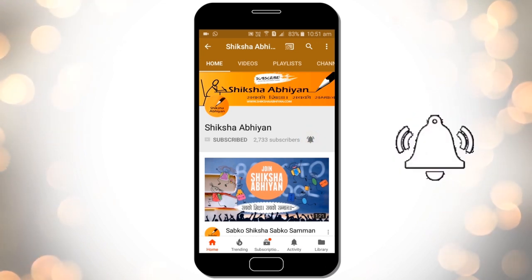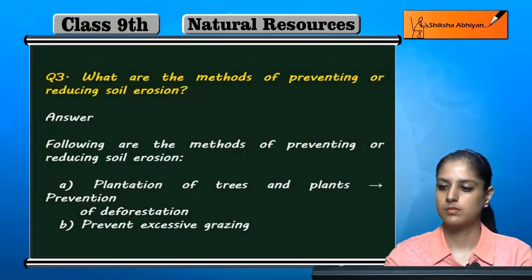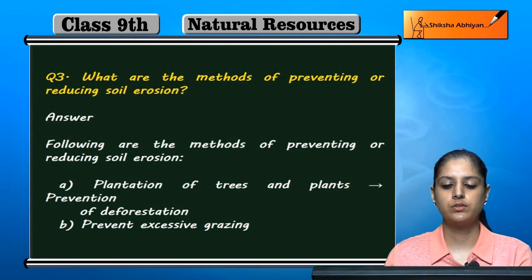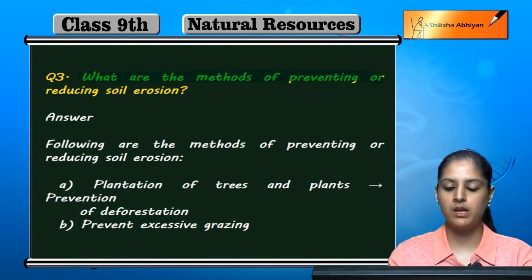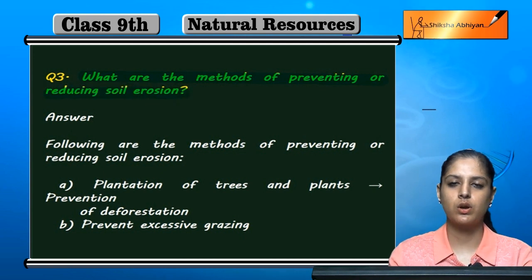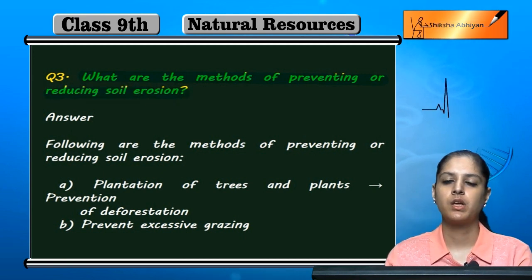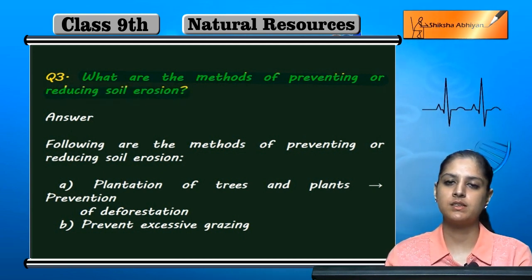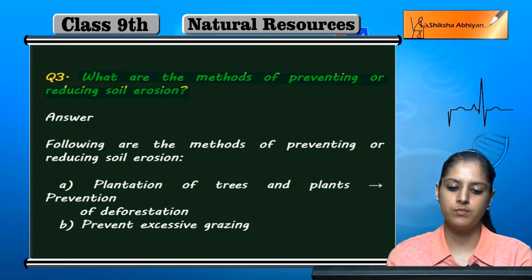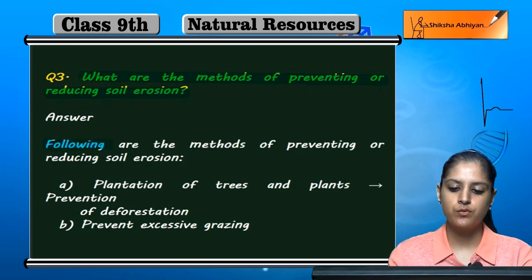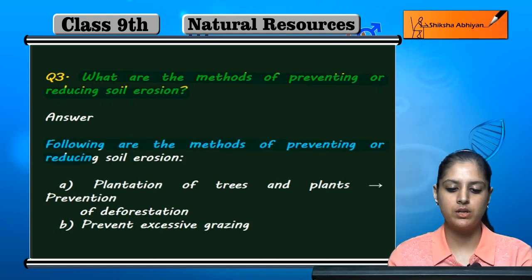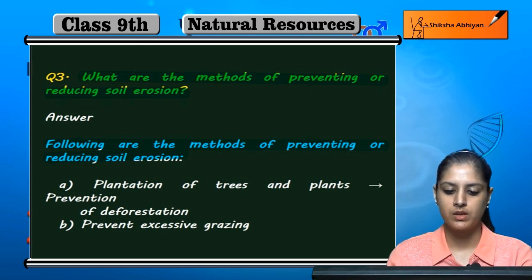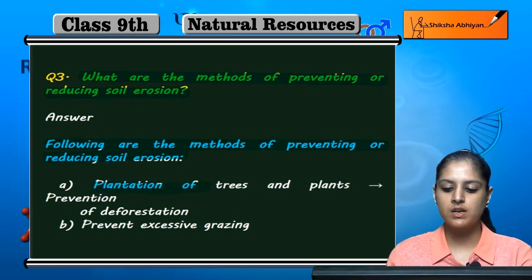Question 3: What are the methods of preventing or reducing soil erosion? The following are the methods of preventing or reducing soil erosion. The first method is trees.